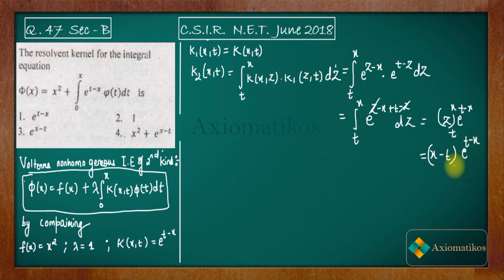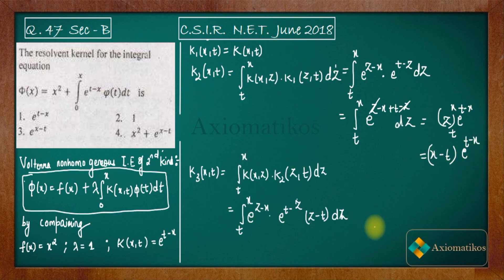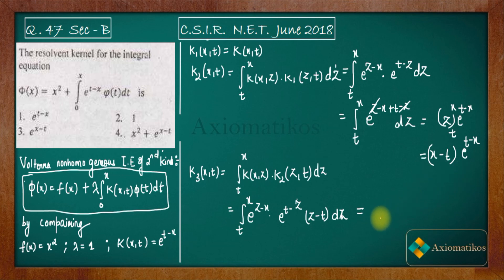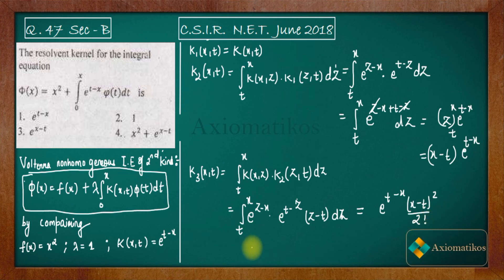Now let us find k3. If you calculate it yourself, what you will get is e^(t − x) multiplied by (x − t)² / 2!. This is the result for k3.